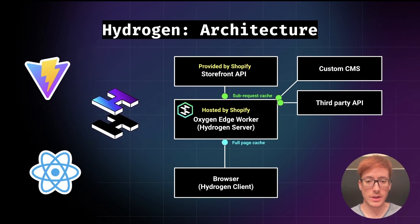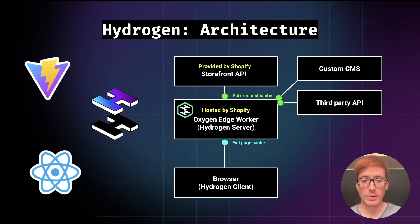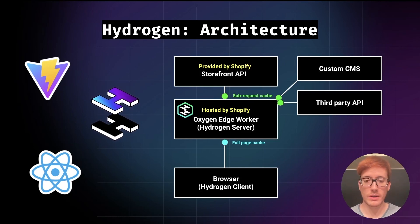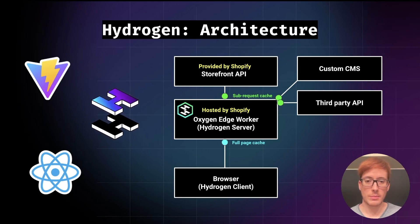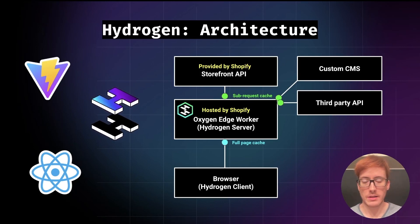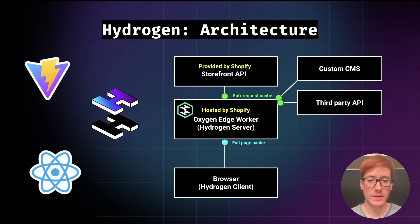An important feature in Hydrogen is the cache. It allows us to customize the sub-request cache but also the full-page cache. It provides sensible defaults, but we can manually change them if needed. For example, a marketing page where the content doesn't change often can use a longer full-page cache. But for a dynamic page such as a product page, we can use a shorter cache duration for specific data and a longer one for other data at the sub-request level.